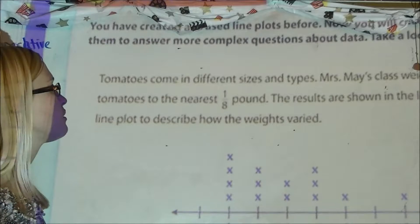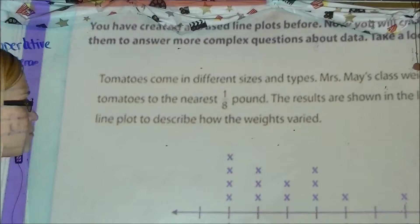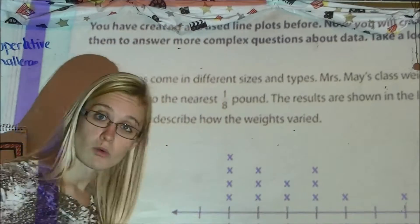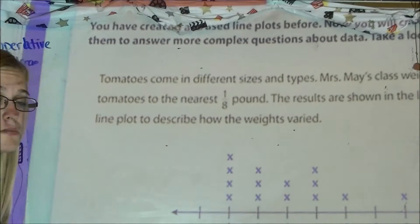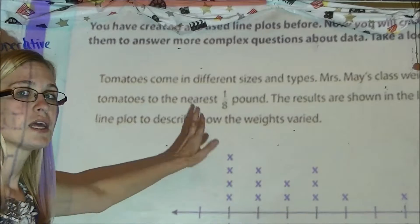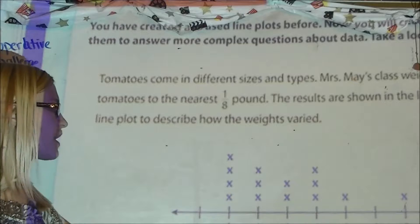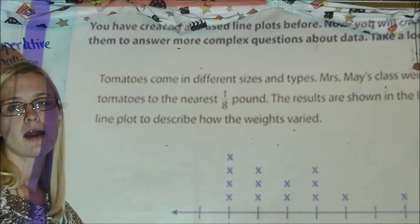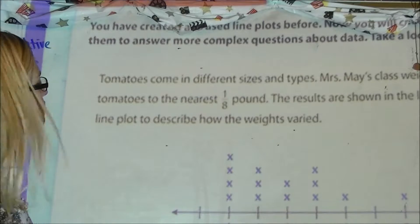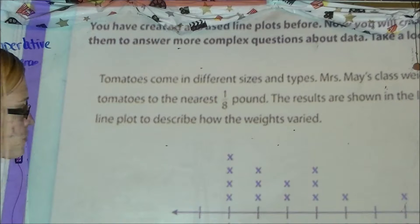Use the line plot to describe how the weights vary. Remember that a line plot is much like a number line in that it's divided into equal intervals, and each mark above it is a data mark representing frequency — in this case, how many tomatoes are at that weight. When I'm looking at this, I should notice what my intervals are divided into first of all.